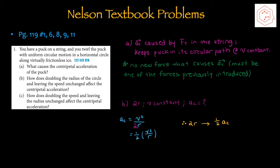Starting off with number 1: you have a puck on a string and you twirl the puck with uniform circular motion in a horizontal circle along virtually frictionless ice. Part A asks what causes the centripetal acceleration of the puck. The centripetal acceleration is caused by the tension of the string. This tension keeps the puck in its circular path at a constant speed. Note that there's no new force that causes centripetal acceleration — the force providing it must be one of the forces previously introduced.